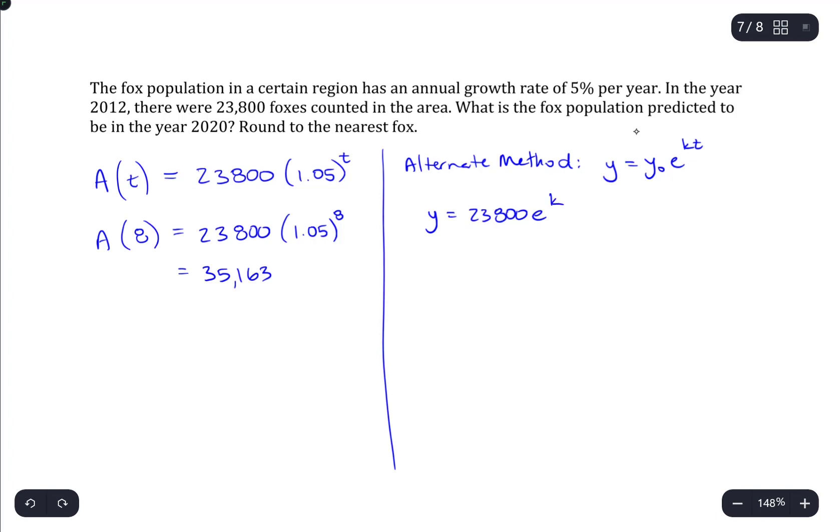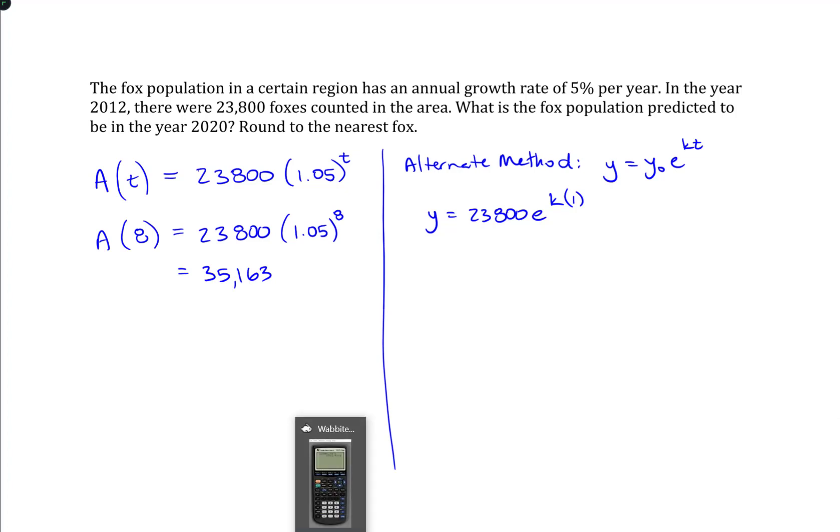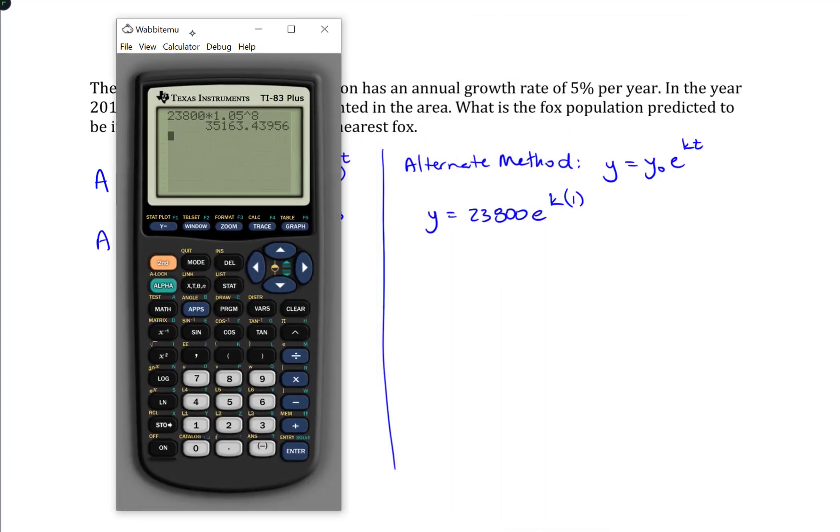Then we have e to the k. We don't know. But, one thing that we do know is that after one year passes, we're going to grow that population size by 5%. So, what would 5% more foxes look like? It would be 23,800 times 1.05. So, that's an increase.